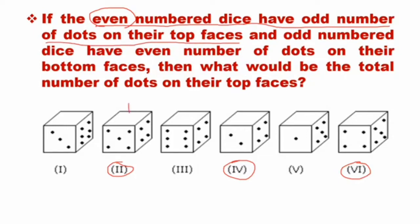In the case of dice 2, 4, and 6, the number of dots on the top face will be odd. Now the next condition: odd-numbered dice have an even number of dots on their bottom face. This is a tricky question.